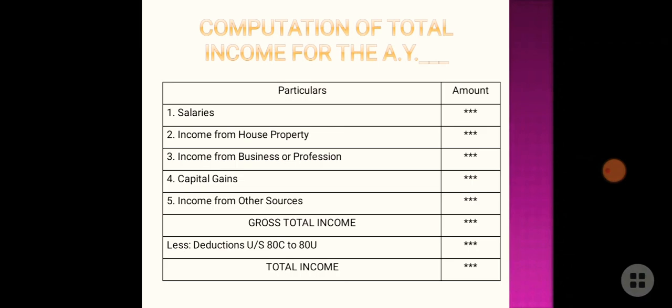This is the basic format for computation of total income for the assessment year. There are five heads of income: first, salary; second, house property; third, business and profession; fourth, capital gain; and fifth, income from other sources — for income not fitting the above criteria. All are calculated and totalled to give the gross total income. Deductions under section 80C to 80U are then applied, and the remaining amount is called total income for the purpose of taxation.